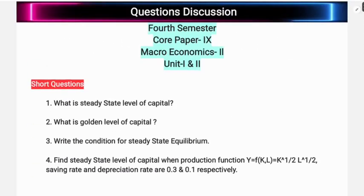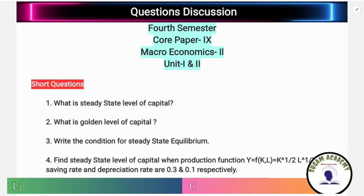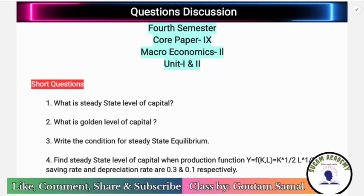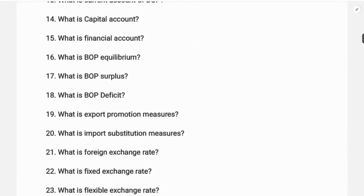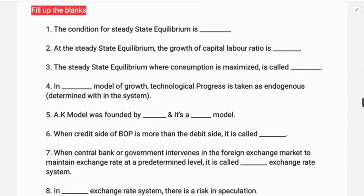Hello everyone, welcome to Sugam Academy. In this class we are going to discuss some questions from the first and second unit of macroeconomics core paper 9. The first question: the condition for steady state equilibrium is that investment is equal to depreciation, expressed as sf(k) = δk.